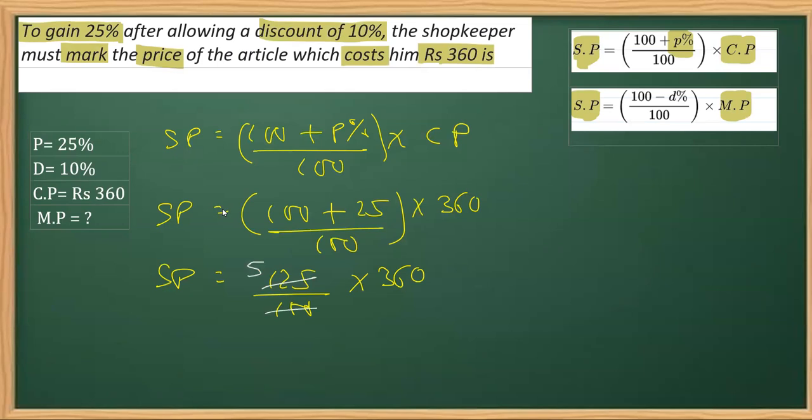This is divisible as you know—25, 5 times; 25, 4 times; 4, 1 times; 4, 90 times. So we got the selling price here, which is 90 into 5—9 into 5 is 45—so rupees 450 is what we got the selling price.